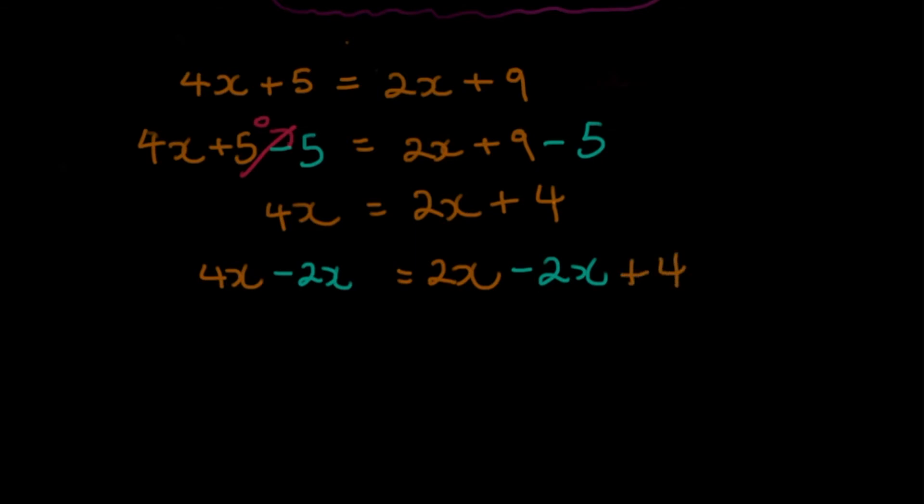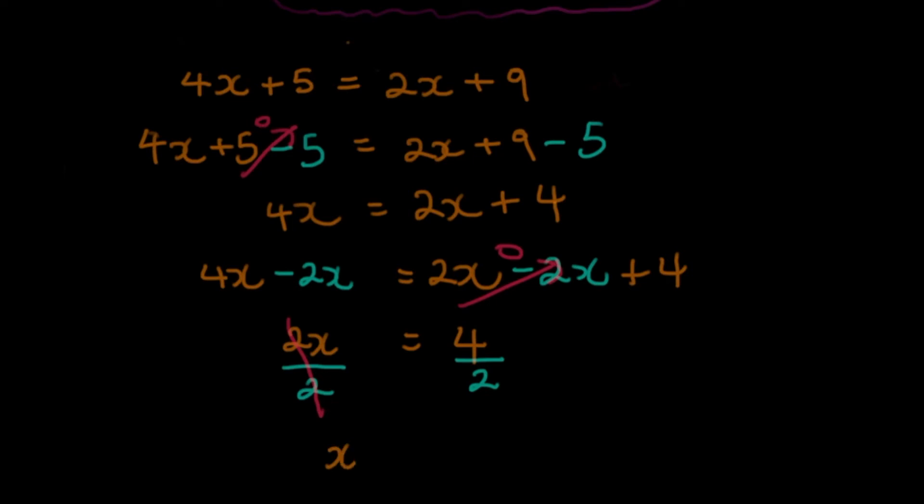4x minus 2x, easy. 2x. By now, you guys know that 2x minus 2x here, that would become 0. So we're only left with 4. Now, Mr. 2, he's attached to the x. And we say we have to separate them. So we have to divide by 2 here. That simply means that x is equal to 4 divided by 2. We all know this. It's 2. Easy.